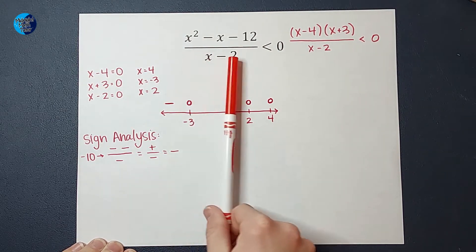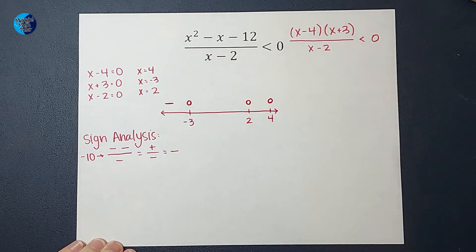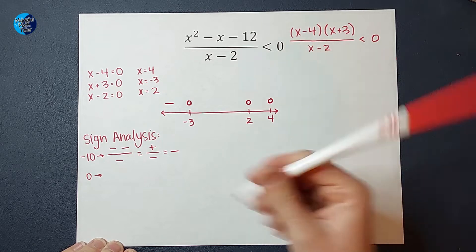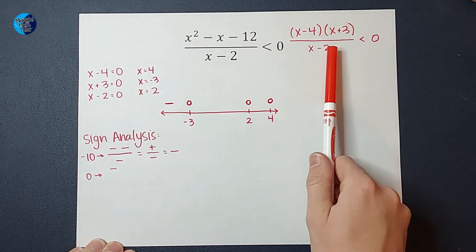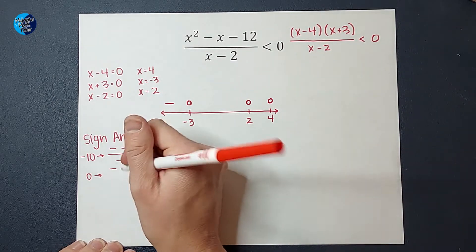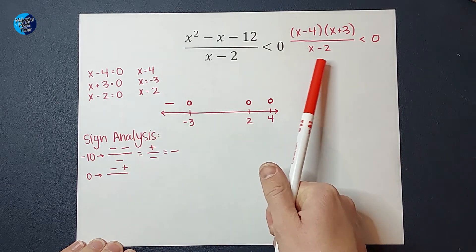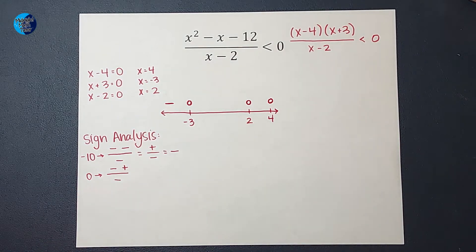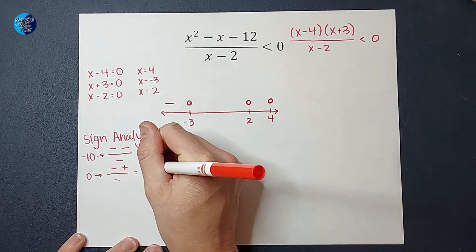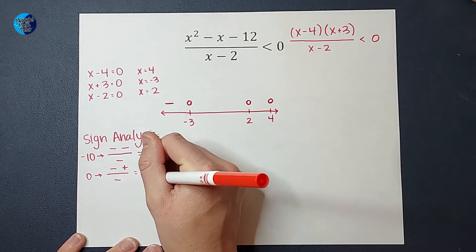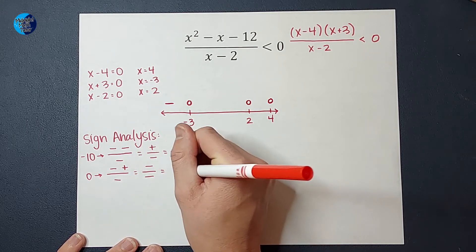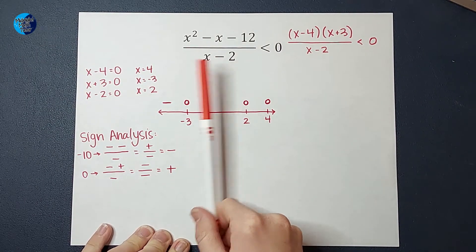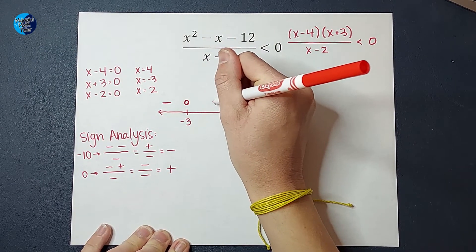Between -3 and 2, I need to pick a number. Let's just pick 0 because that's nice and easy. 0 - 4 is negative. 0 + 3 is positive. And 0 - 2 is negative. So on top, I have a negative times a positive, which is negative. On bottom, I have a negative. And a negative divided by a negative is positive. That tells me that this region between -3 and 2 is positive.